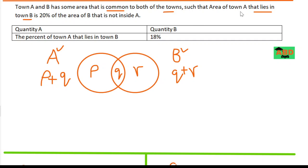So the area of town A that lies in town B, what is the area of town A that lies in town B? Well, it is Q, right? So I can write Q equals, I'm going to write 20 over 100, of the area of B that is not inside A. Well, what is the area of B which is not inside A? It's R, right? So I'm going to write R. Now I can do some simplification. I can simplify that, and I can simplify it even further by saying 5 times Q is equal to R.